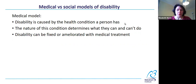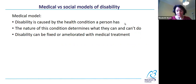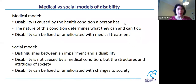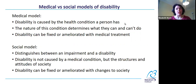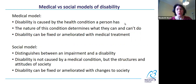The social model of disability is one that was created by disabled people themselves — disabled activists. The idea started coming together in the 1960s, and the term social model of disability was first used in the 1980s. The social model importantly distinguishes between an impairment and a disability. The impairment is the physical thing, but the disability is not caused by the medical condition — it's caused by the structures and attitudes of society. Depending on the disability, it can be fixed or ameliorated with changes to society.